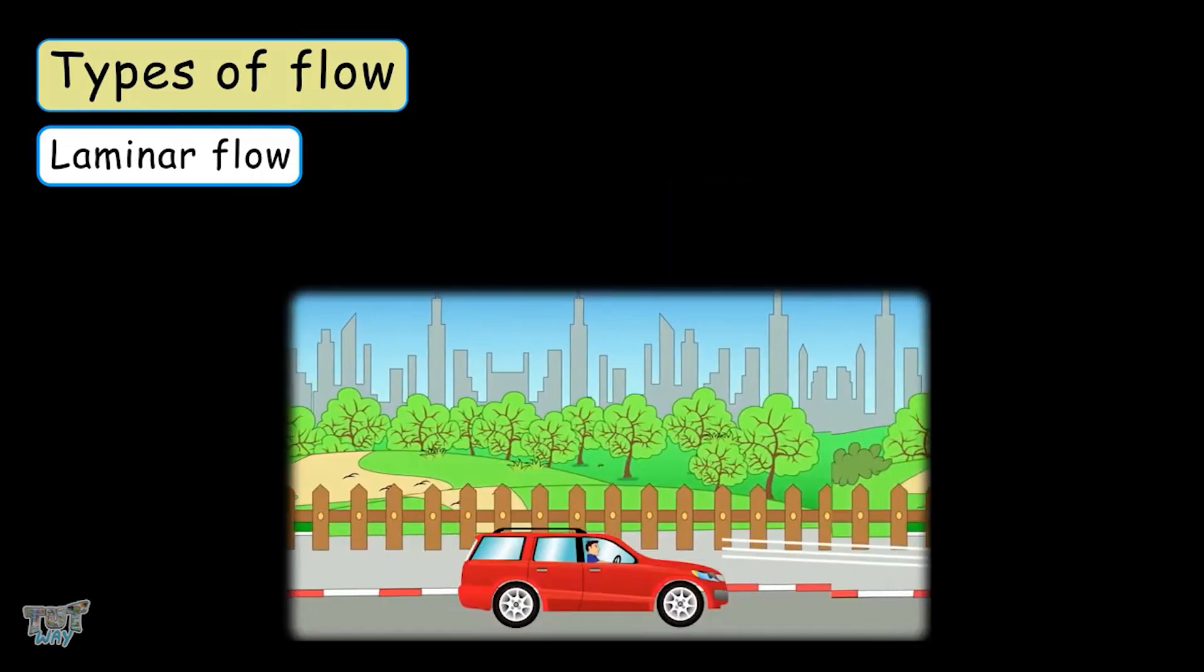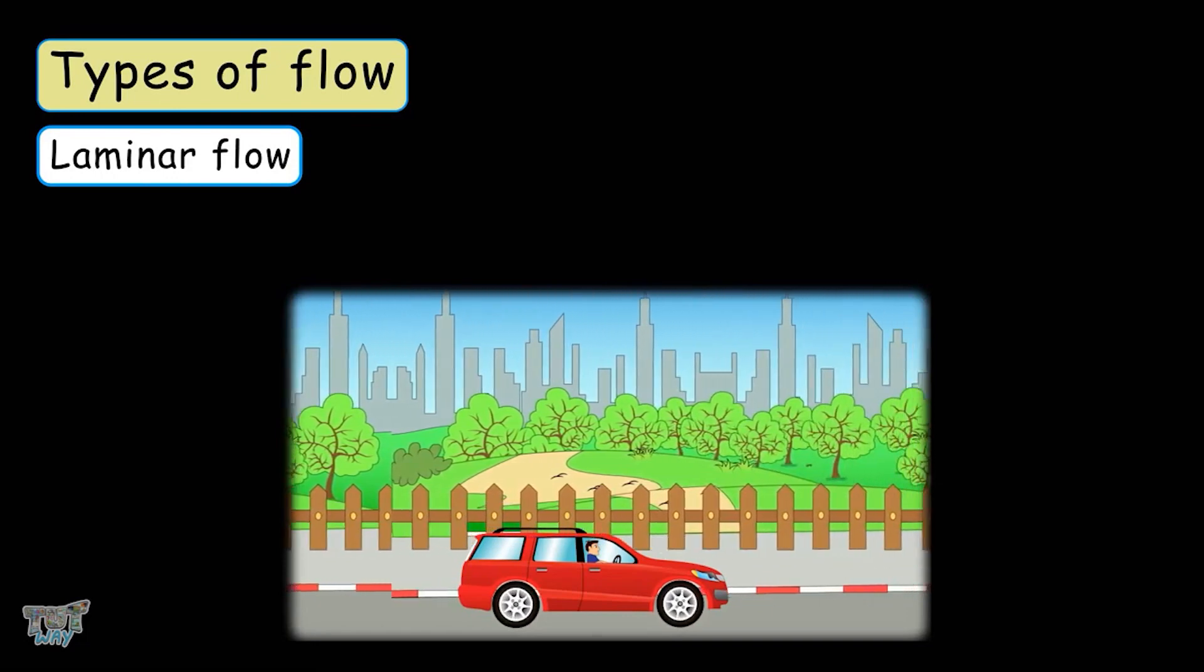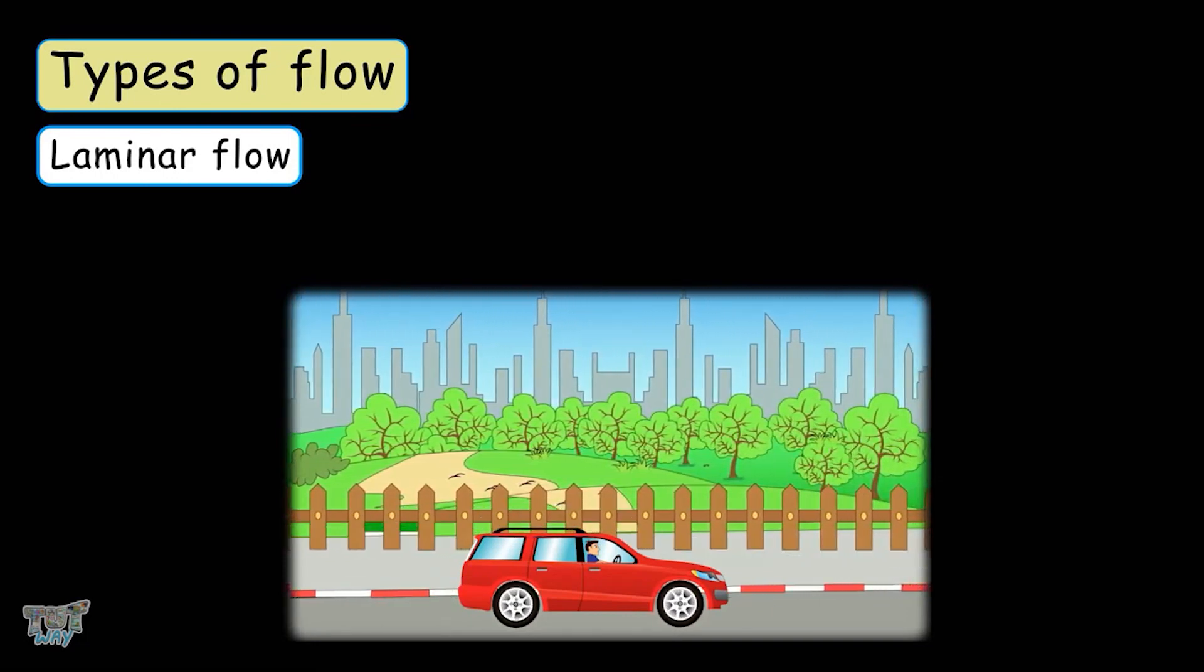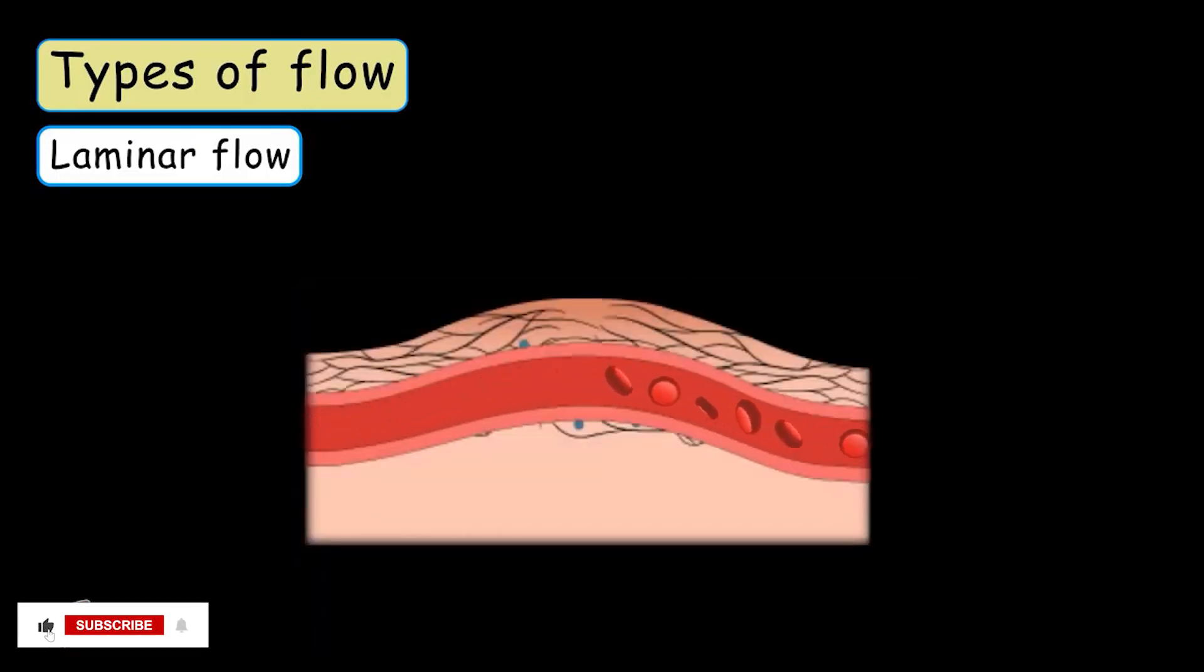Laminar flow of air reduces the drag in the case of a moving vehicle. Now, let's learn some examples of laminar flow. Flow of blood in the vessels of a healthy person. Flow of a liquid in the pipes.